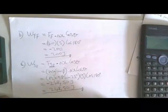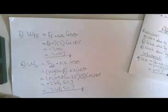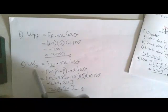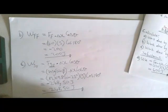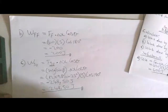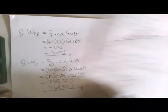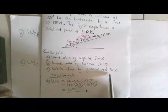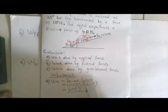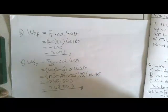We write this as positive 248.50 joules because work is a scalar quantity, as we discussed. I hope you understand calculating the work done by the gravitational force. The other questions will follow — thank you.